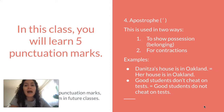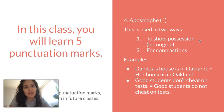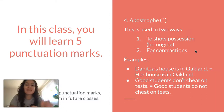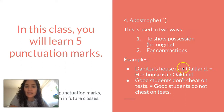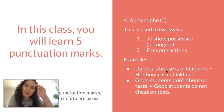Number four is the apostrophe. The apostrophe looks like this, and we use it in two different ways. The first way is to show possession — meaning something belongs to someone. For example: "Danitza's house is in Oakland." The apostrophe with my name shows the house belongs to me, which is the same as saying "her house is in Oakland."